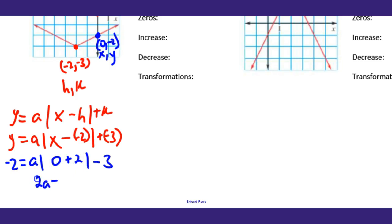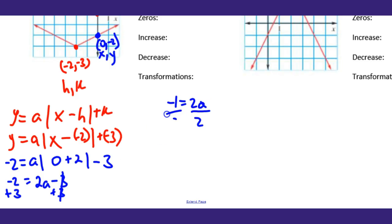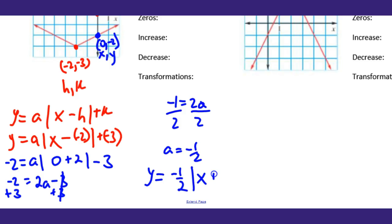Zero plus two is two, so: 2a - 3 = -2. Add 3 to both sides: -2 + 3 = 1, so 1 = 2a. Divide by 2: a = 1/2. So the equation for this first graph is y = (1/2)|x + 2| - 3. Remember it's plus because negative minus negative is positive.